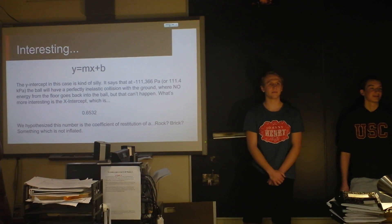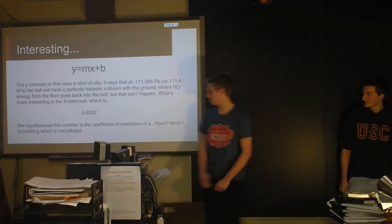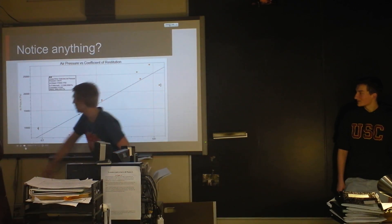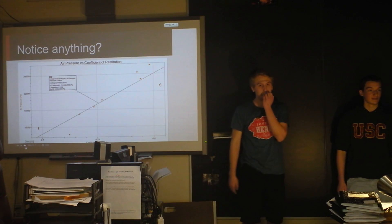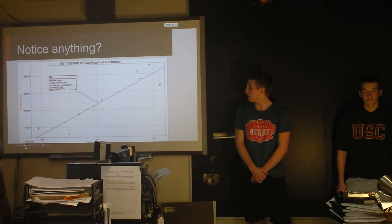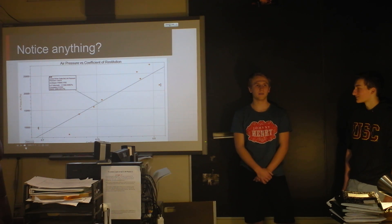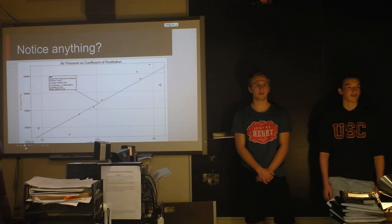Okay, so you've got that nice line there, right? So I presume eventually that line would hit one on the x-axis, where it's got a one coefficient of restitution, which would be a really high air pressure? Yeah, too high for the volleyball. So that would be where it would lose no energy in a bounce?